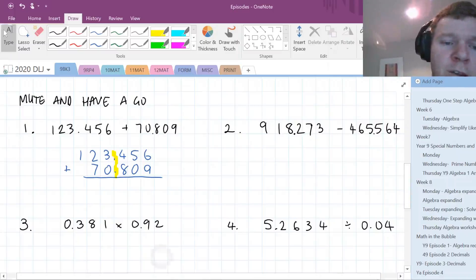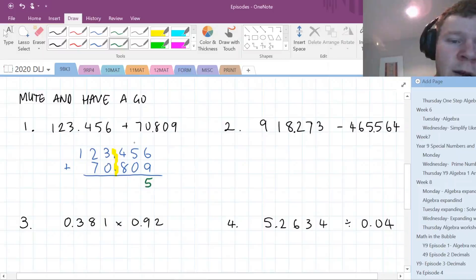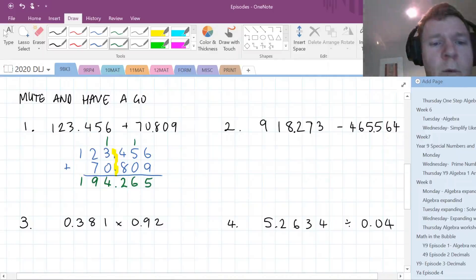Now we're just adding, starting from the right, moving across. 9 and 6 makes 15, carry 1 up. 1 and 5 and 0 makes 6. 4 and 8 makes 12, carry that over. 1, 3 and 0 makes 4. 2 and 7 makes 9, and 1 is that. 194.265.